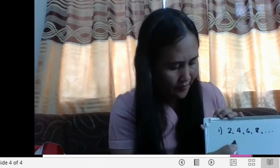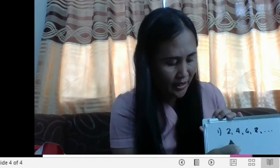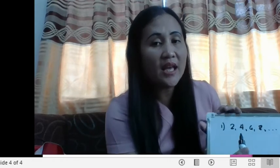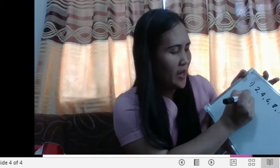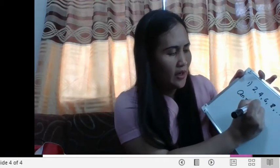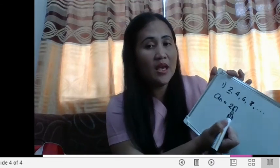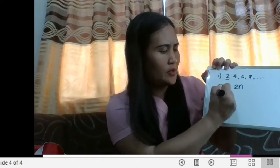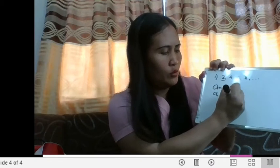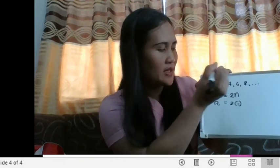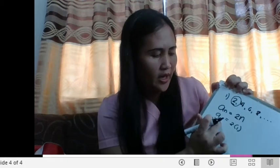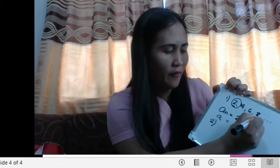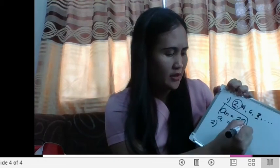If you observe the sequence 2, 4, 6, 8, you are increasing by 2. 2 plus 2 is 4, plus 2 is 6, plus 2 is 8. The number being added is 2, so we can write a sub n is equal to 2n. If a sub 1 equals 2 times 1, the answer is 2, which is our first term — correct. If we check a sub 4, it is 2 times 4, which is 8, and our fourth term is indeed 8. So our equation is a sub n equals 2n.